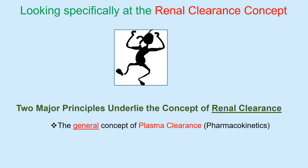Renal clearance has been described as one of the more difficult concepts for students to comprehend in physiology. The difficulty may in part reflect the quantitative nature of renal clearance, or because students have to apply models from biophysics and bioengineering to events occurring in the kidney. To make our understanding more accessible, we will concentrate on two principles: the general concept of plasma clearance, important for pharmacokinetics, and secondly the concept of mass balance as it applies to the kidney.